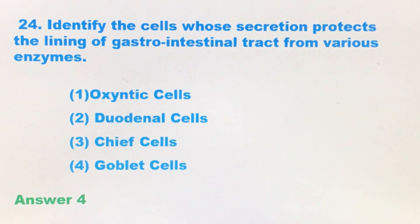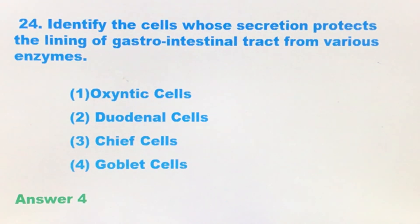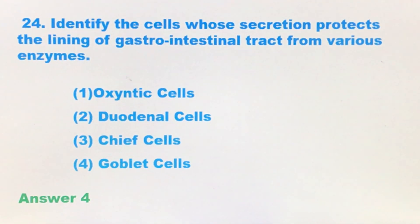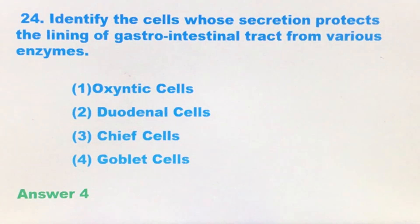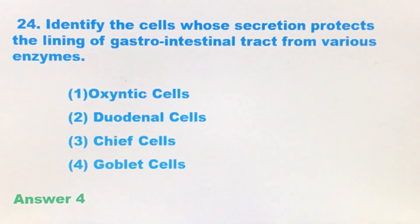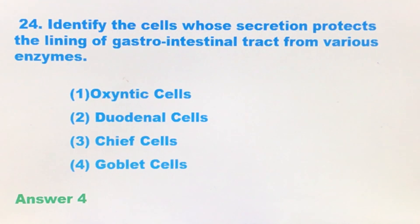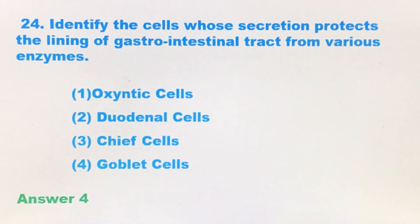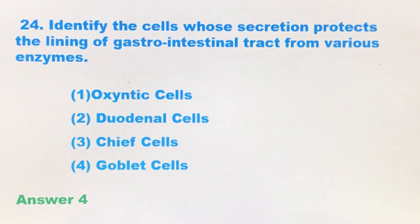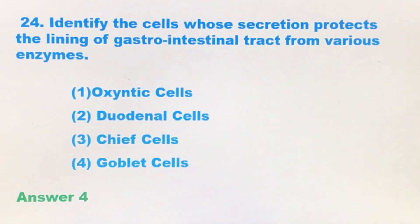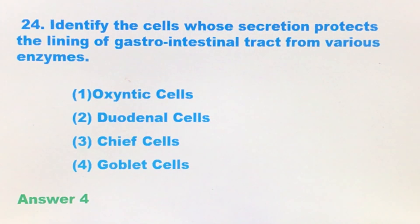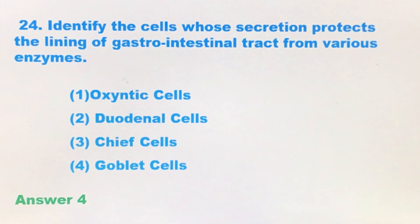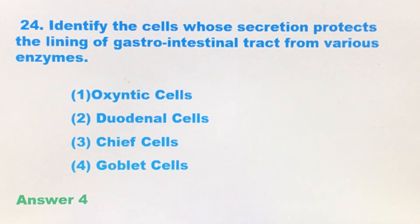The second option is duodenal cells. Duodenal cells are located in the duodenum and they secrete mucus and the alkaline bicarbonate. However, this does not protect the whole of the GI tract. The main function of the duodenal cell secretion is the alkaline bicarbonate — it does not give protection.